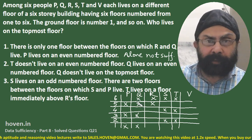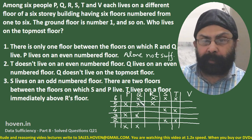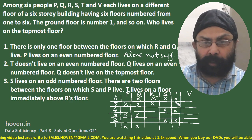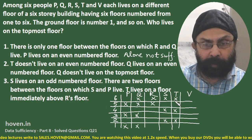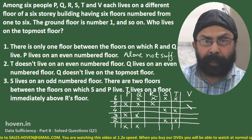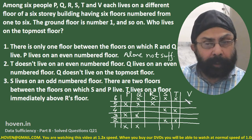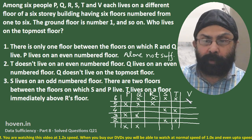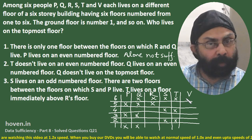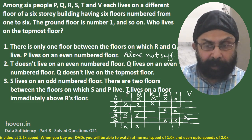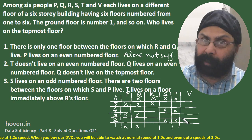From this grid we can see that Q, R, S and T do not live on the topmost floor. Now the contention is between P and V. The examiner hasn't mentioned anything about V, so this will remain a suspense for now. Let us proceed to the second pass.